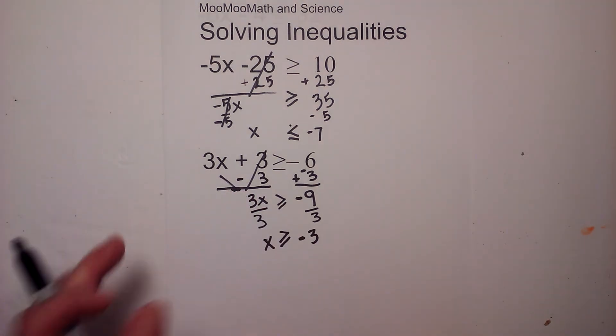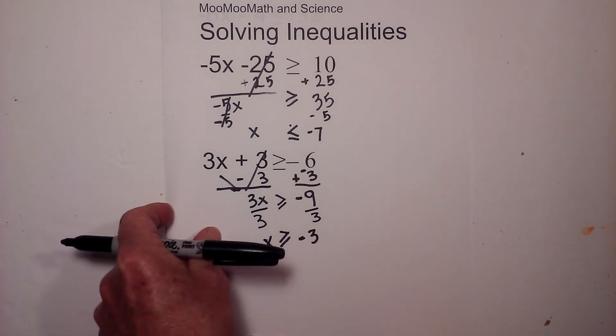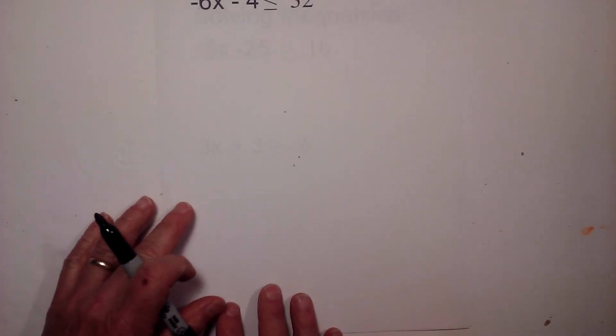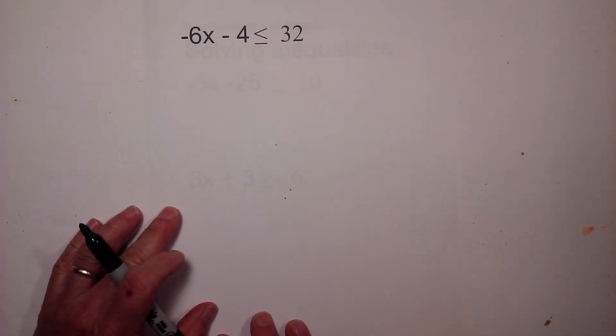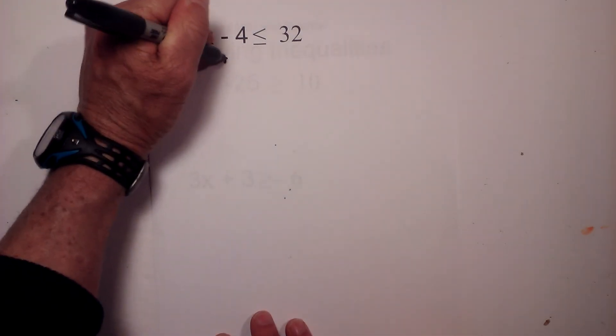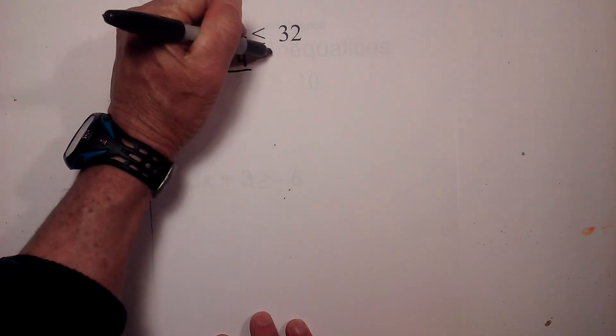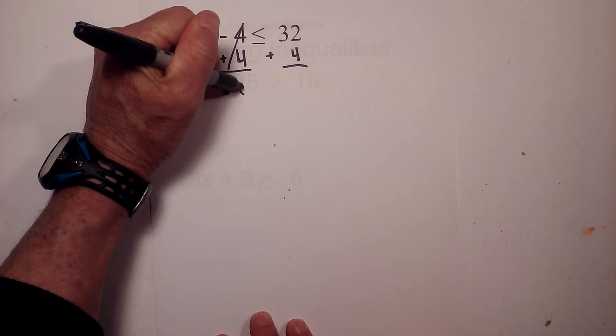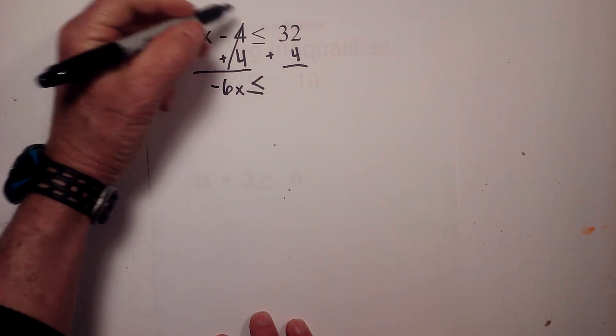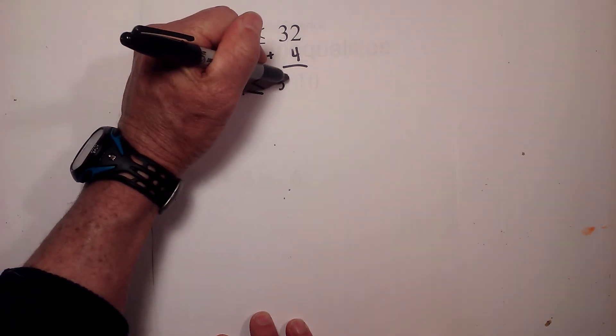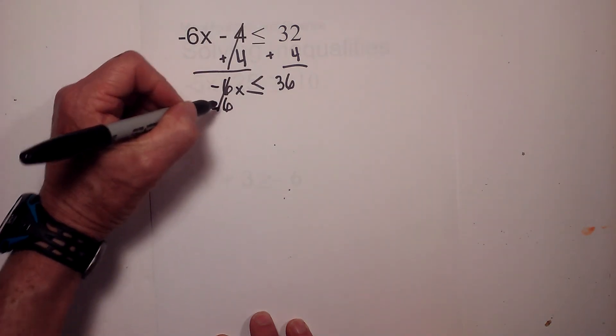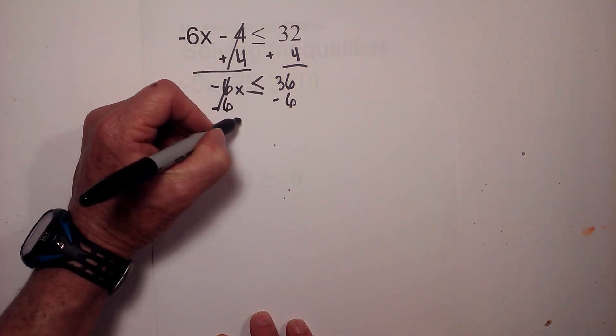Let's try one more, see if we've got a handle on this. I will add 4, add 4, add 4. These cancel, bring down the negative 6x, there's my sign, 32 plus 4 is 36.